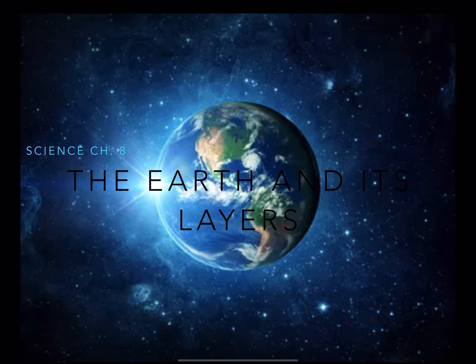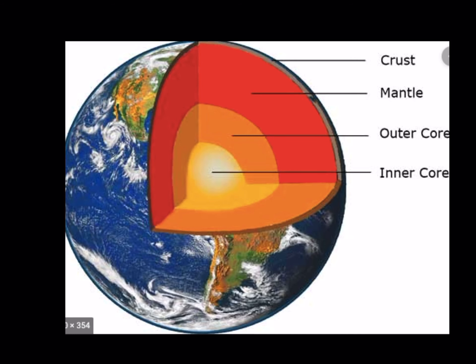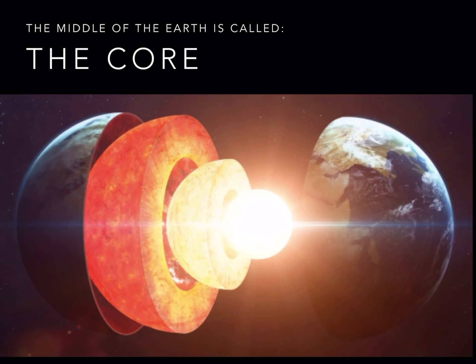We are learning about the earth and its layers this week. This is a picture of the earth and its layers. The top layer is the crust, underneath that is the mantle, then the outer core and the inner core. You can see the inner core is the centermost part of our earth. There are two parts to the core: the inner core and outer core, then the mantle and the crust.